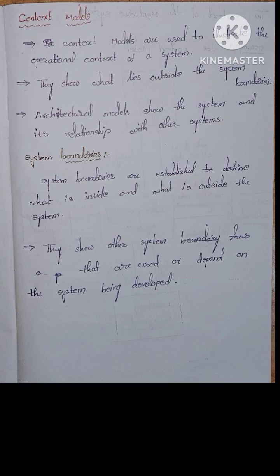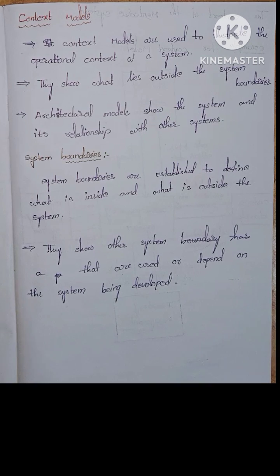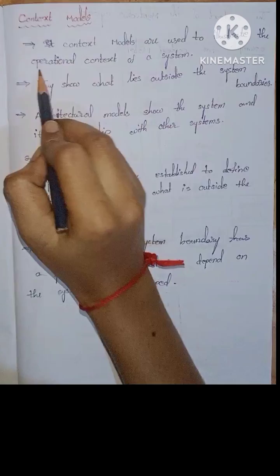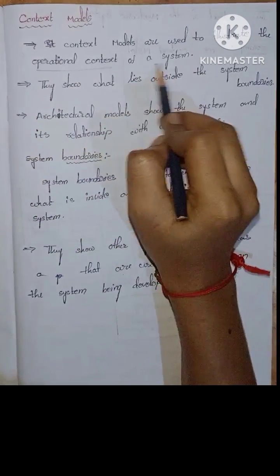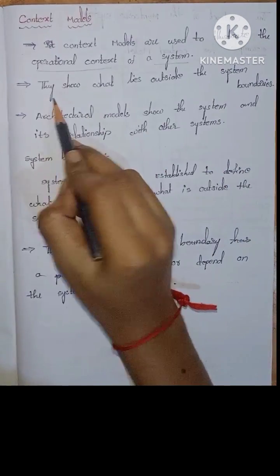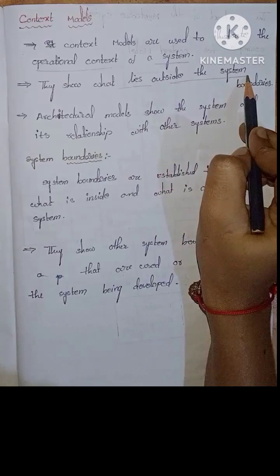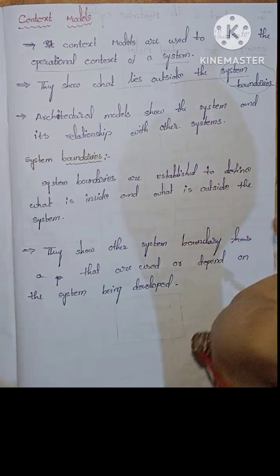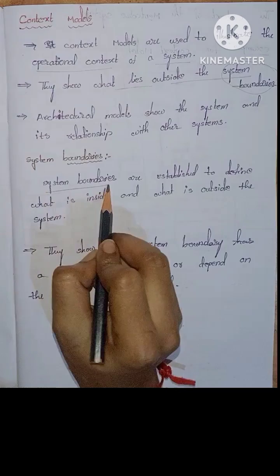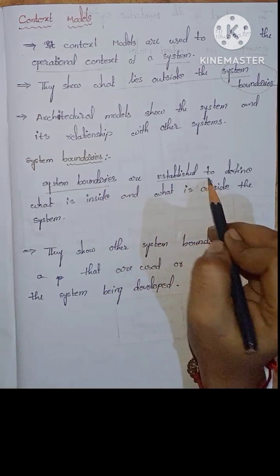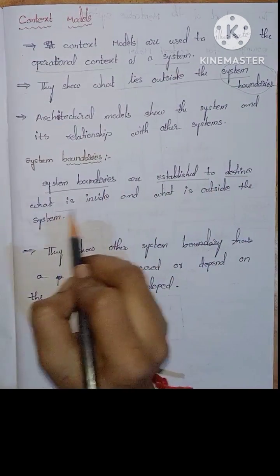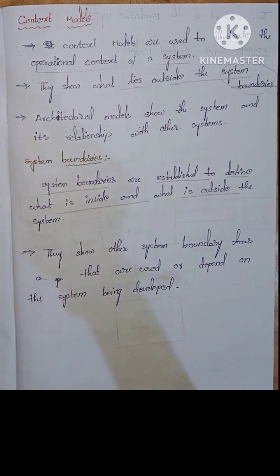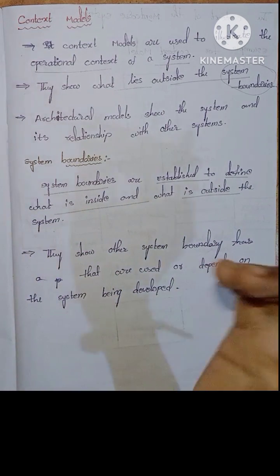The next topic is context models. Context models are used to illustrate the operational context of a system. They show what lies outside the system boundaries. System boundaries are established to define what is inside and what is outside the system.